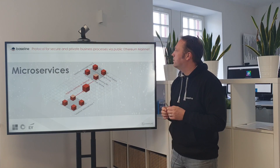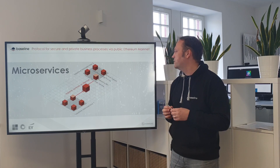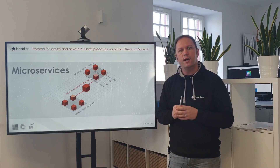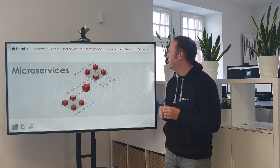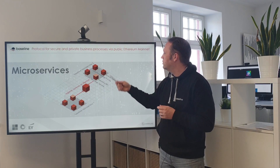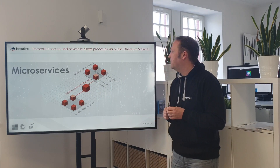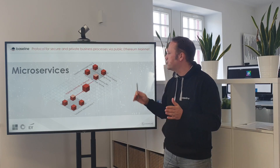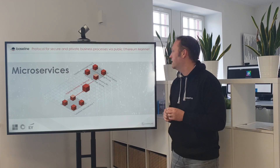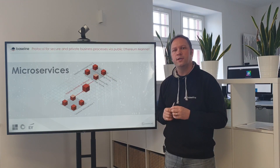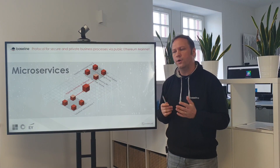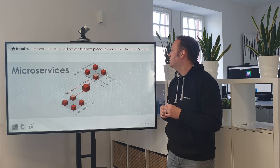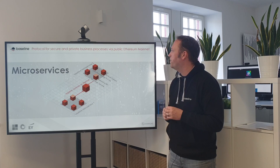Technically, Baseline is built around a microservice architecture. In this example you see two microservices — representing two different companies — each running their own microservice architecture consisting of four components: the Baseline API, which is the main gateway to communicate between microservices and interact with the mainnet; a queuing system; a messaging service to communicate with other microservices; and zero-knowledge proofs, a component that builds trustful states of business data. These are the components defining a Baseline microservice right now.